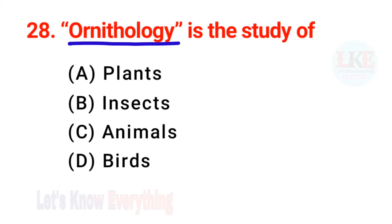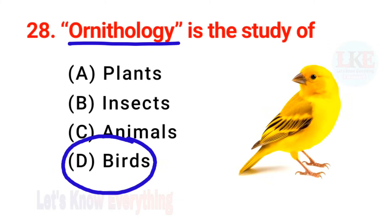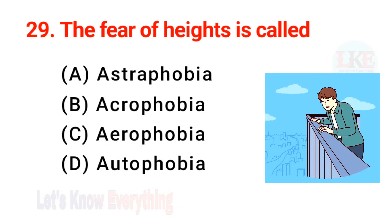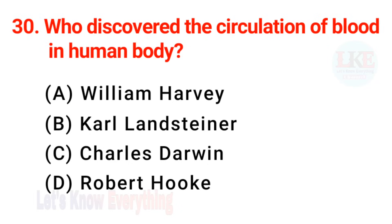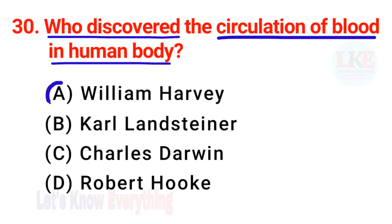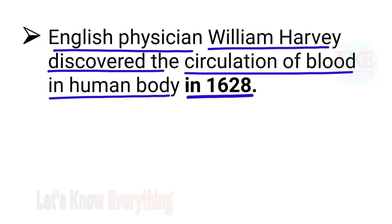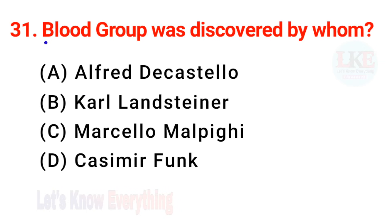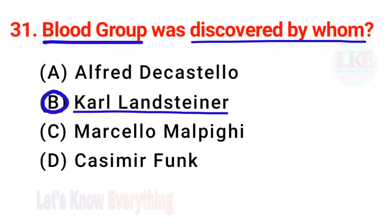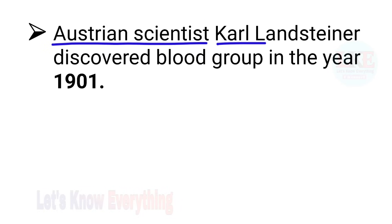Question number 28: ornithology is the study of birds. Question number 29: the fear of heights is called acrophobia. Question number 30: who discovered the circulation of blood in the human body? Right answer option A — William Harvey. English physician William Harvey discovered the circulation of blood in the human body in 1628. Question number 31: blood group was discovered by whom? Right answer option B — Karl Landsteiner. Austrian scientist Karl Landsteiner discovered blood groups in the year 1901.